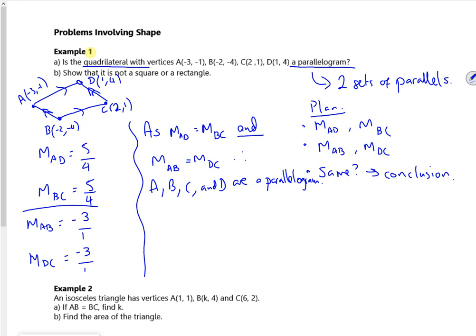So it says show that it is not a square or a rectangle. If it said show it was a square or a rectangle, we'd look at length. But if it's not a square or a rectangle, we want to see what the angle is. We can check it for one corner. That's all we need to do. We just want to see if a corner is perpendicular.